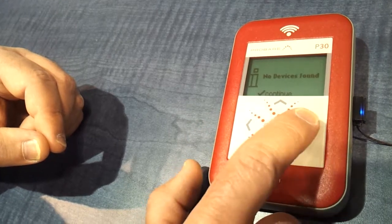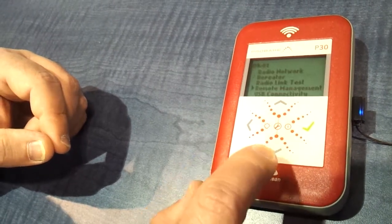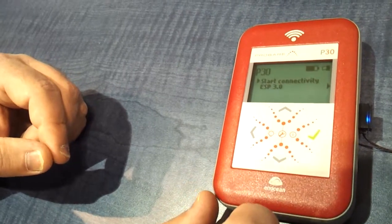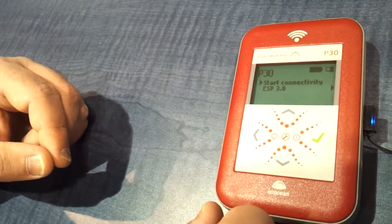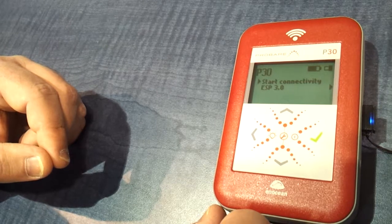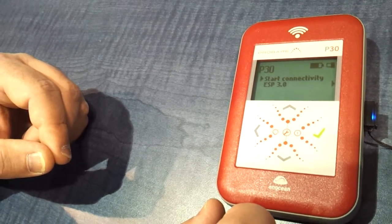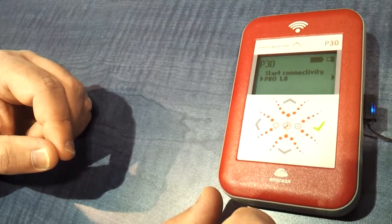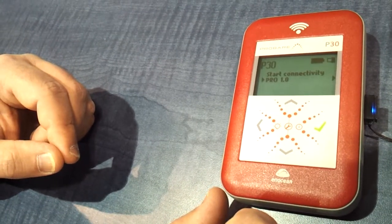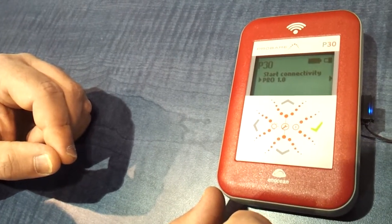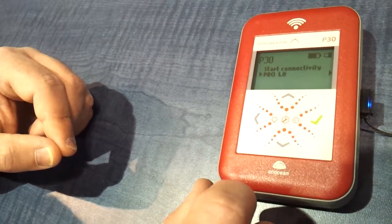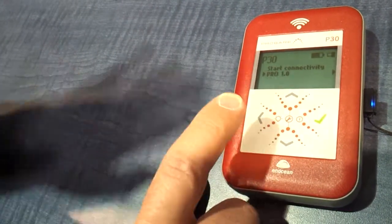Let's make that in a later video how that works. And, as we said before, you can connect the P30 either via ESP30 to the Dolphin view from EnOcean or via the Pro 1.0 interface to a software upcoming from Probari. Thank you. Lots of things, guys!